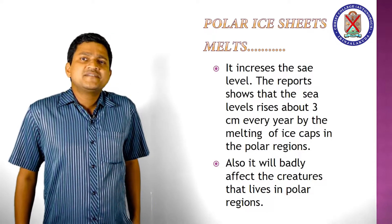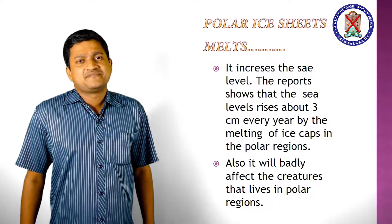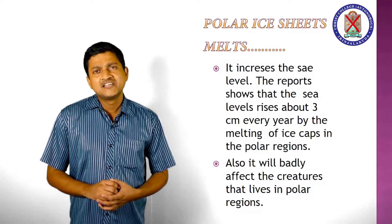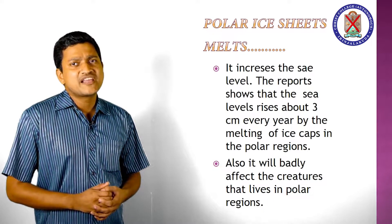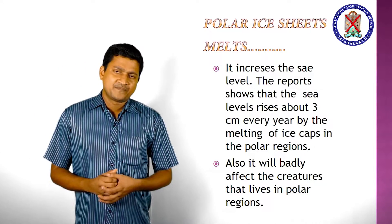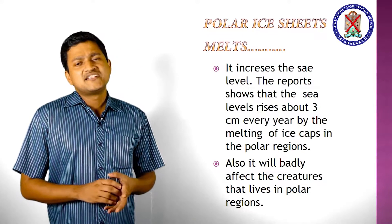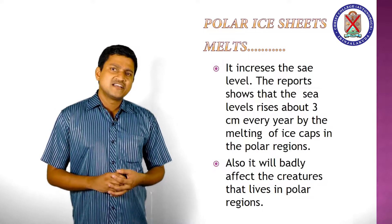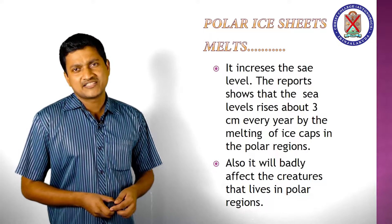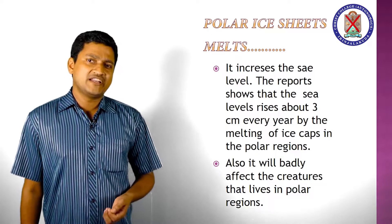The next impact of greenhouse effect is polar ice sheet melt, which increases the sea level. Reports showed that the sea level rises about 3 cm every year due to the melting of ice caps in polar regions. This also directly contributes to sea level rise, floods in different regions of the world, and badly affects creatures that live in polar regions.